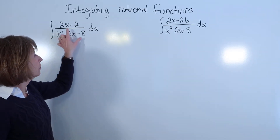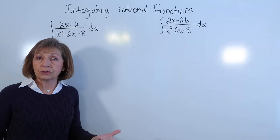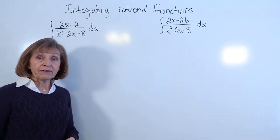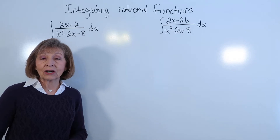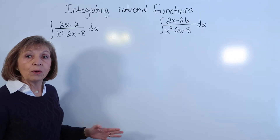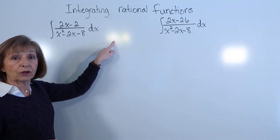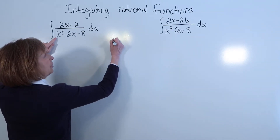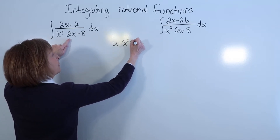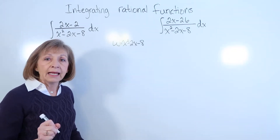When the degree of the numerator is smaller than the degree of the denominator, as it is here, I skip division and instead first check whether a straight u-substitution works, where u might be the entire denominator expression. We'll do that work to the side — let u equal the entire denominator, x squared minus 2x minus 8.